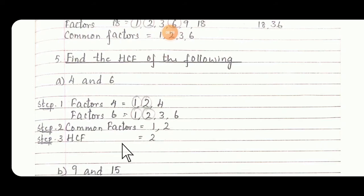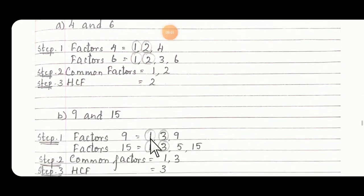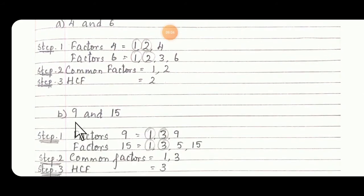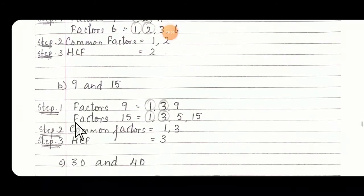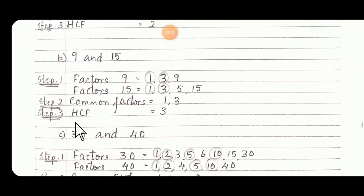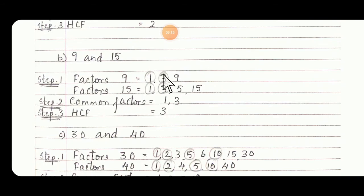Then B: 9 and 15. So first find factors of 9, then factors of 15. Then write down the common factors. Common factors are 1 and 3. What will be the HCF? The HCF will be 3.